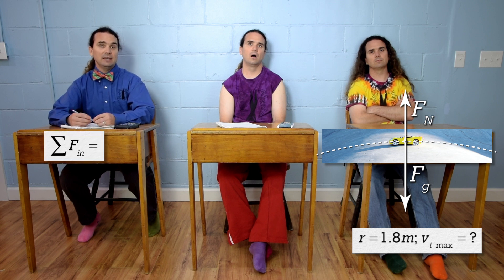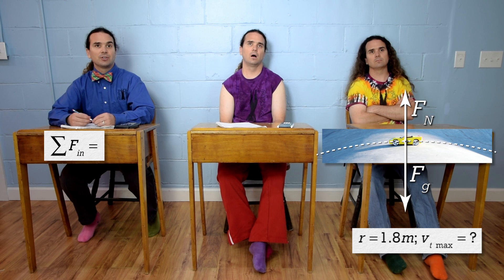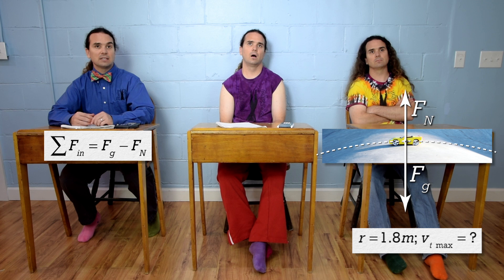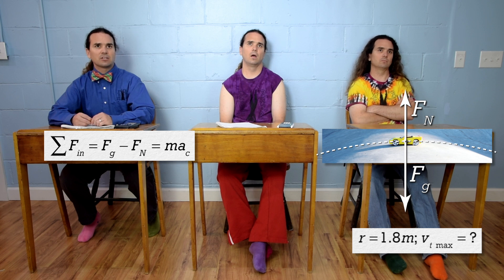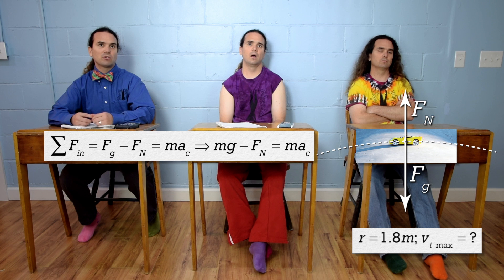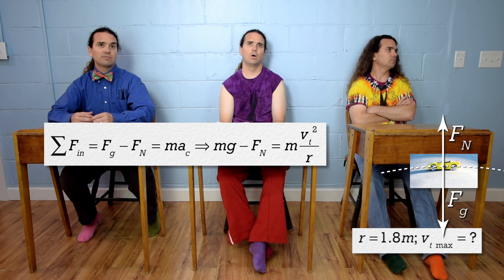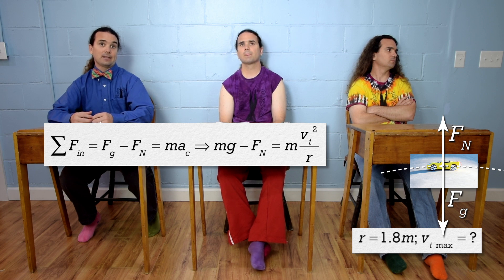The net force in the in direction equals, the force of gravity is in, so it is positive, and the force normal is out, so it is negative. Those are all the forces, so that equals mass times centripetal acceleration. We can substitute mass times acceleration due to gravity for the force of gravity, and substitute tangential velocity squared over radius for the centripetal acceleration.